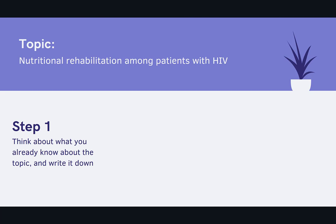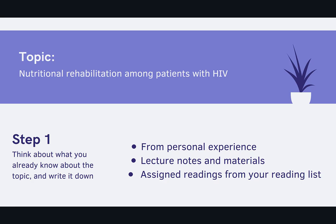Step one: think about what you already know about this topic and write it down. This could be information from personal experience, from your lecture notes and materials, or from assigned readings from your reading list. When taking notes from readings, remember to make note of the bibliographic information, including title and author, for referencing and citation purposes later on. It's useful to get all this information in one place.